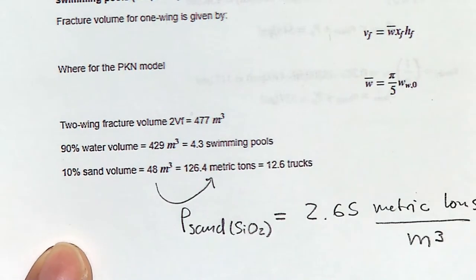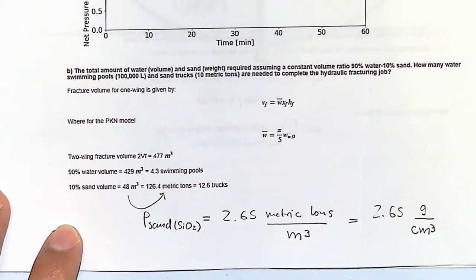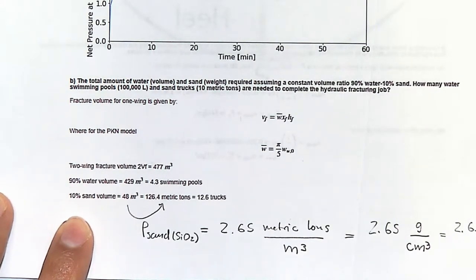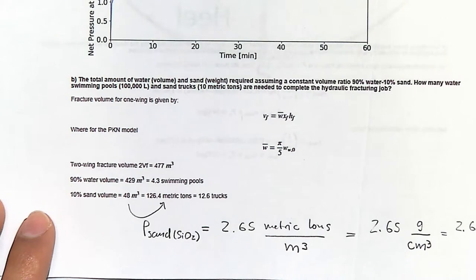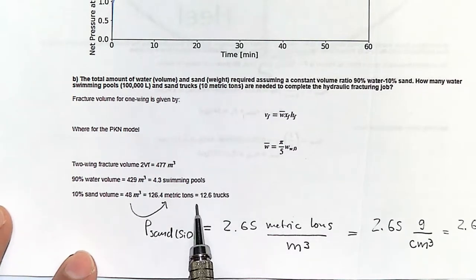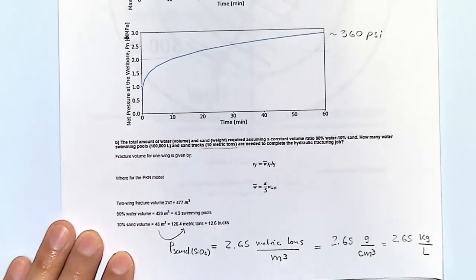The density of quartz is 2.65 metric tons per cubic meter — the same as 2.65 grams per centimeter cube. A useful way to remember it: a one-liter bottle of quartz would weigh about 2.65 kilograms or about 5 pounds. Considering that each truck carries 10 metric tons, you need about 13 trucks for this hydraulic fracture job.